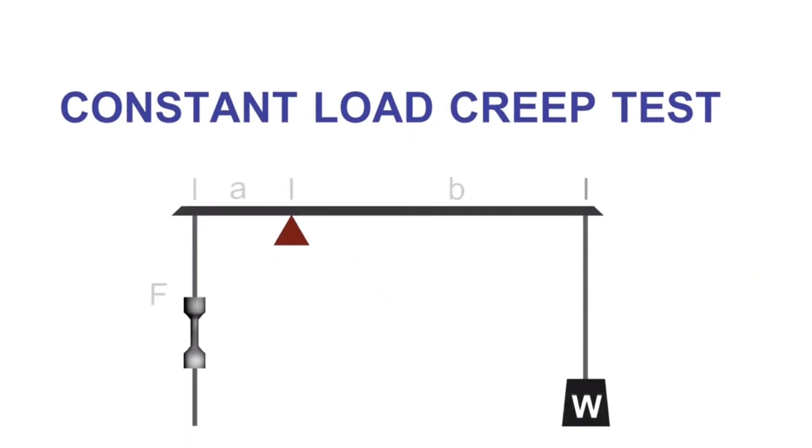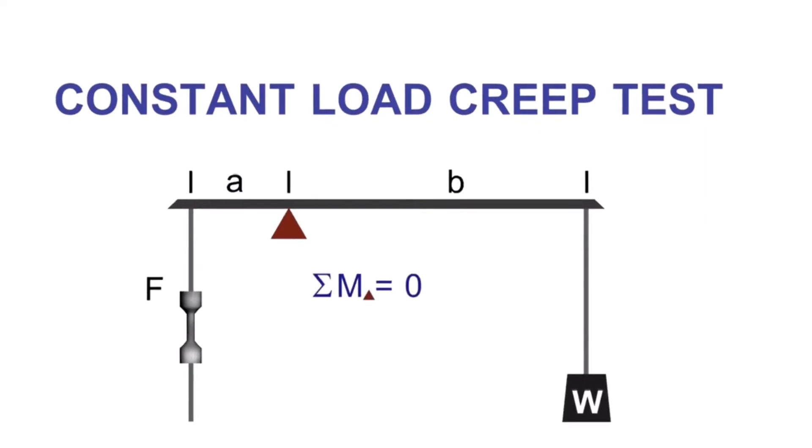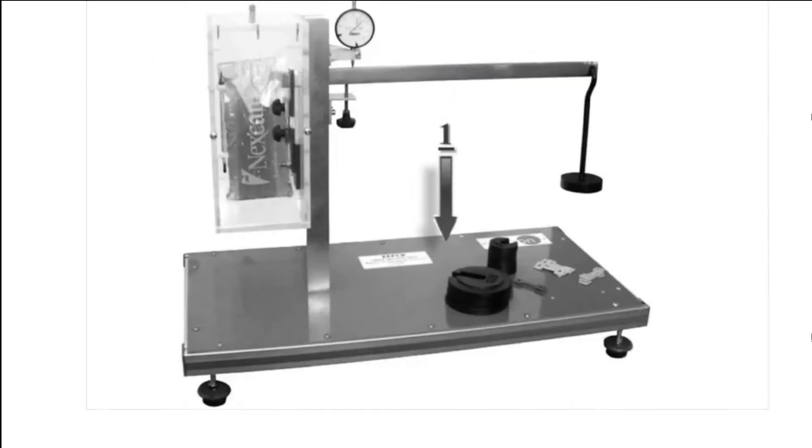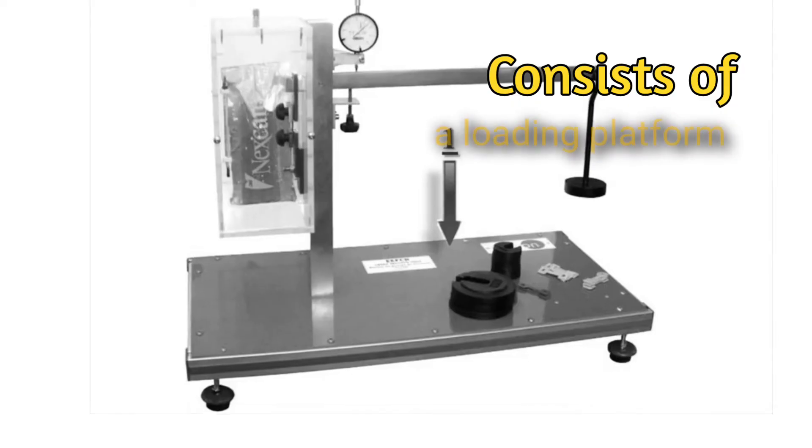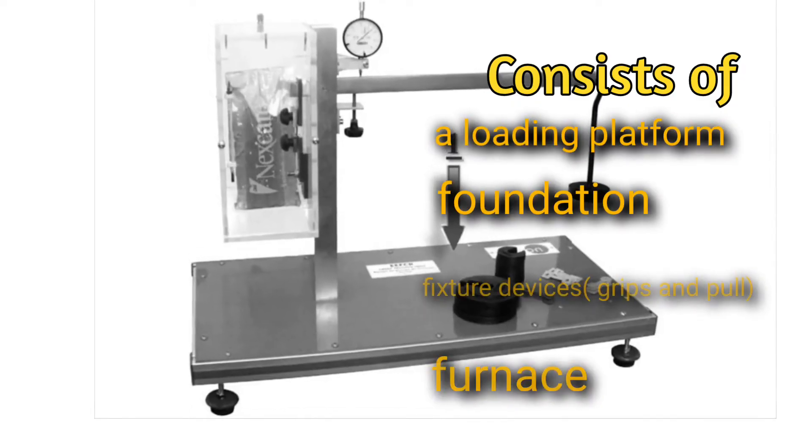The main type of creep testing machine is a constant load creep testing machine. The constant load creep machine consists of a loading platform, foundation, fixture devices, and furnace.